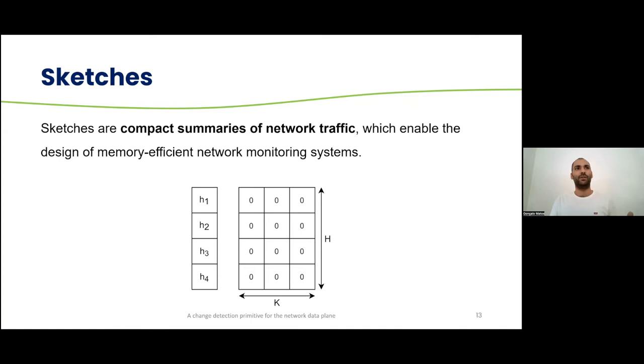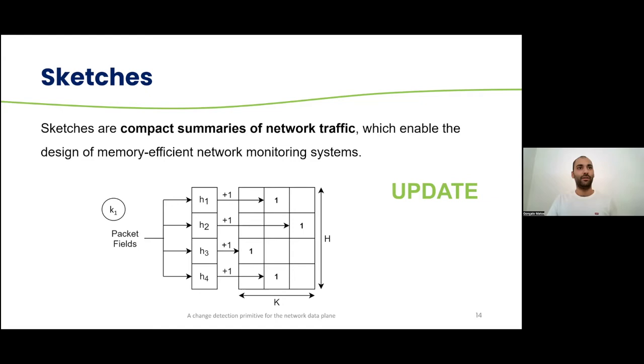We'll now move to the design of Chameleon. And first, I will explain a bit better what are sketches and how do they work if you're not used to it. So sketches are compact summaries of network traffic, which enable the design of memory efficient network monitoring systems. It's, as you can see below, a matrix-like data structure with a width K and the height H, and for each row of the sketch, you give it a hash function. So for example, if you want to update it, imagine you have a key K1, you would select the packet fields you want to hash, and you would hash it to one position of each row of the sketch and update it with a value. This value could be just an increment of one, or it could be the size of the packet. You choose it. Then we would have an update for K2, for example. We would hash to other positions in each row of the sketch. Then K3 and K1, again, and we would update the sketch.